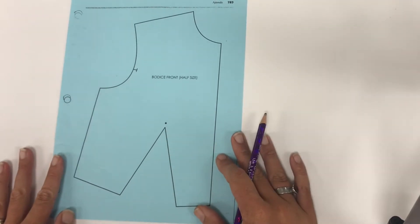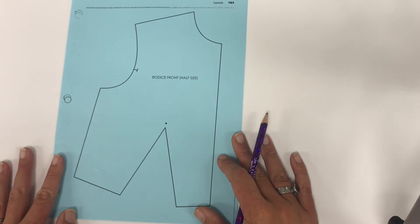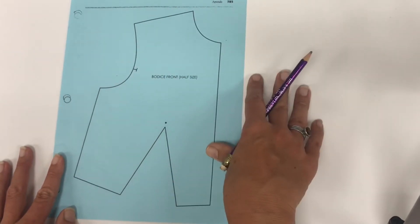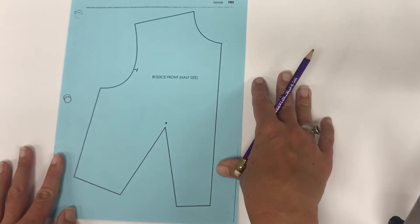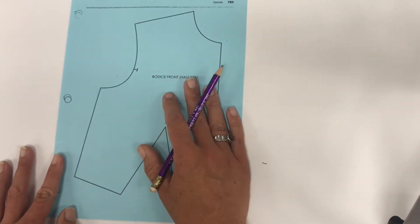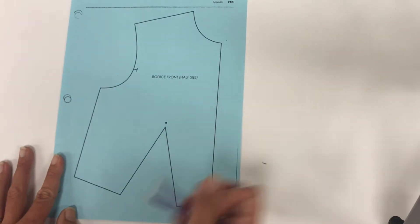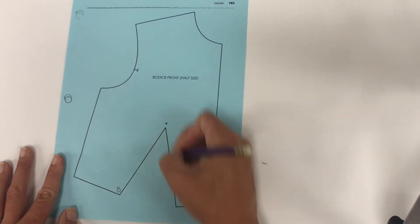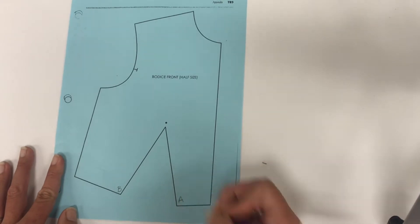So the first step, our instructions say to trace our pattern, which I have a photocopy of, so check. Then it tells us to draw a slash. Oh, it then says to draw, label the dart legs A and B. So this dart leg we are labeling B and this dart leg is labeled A.